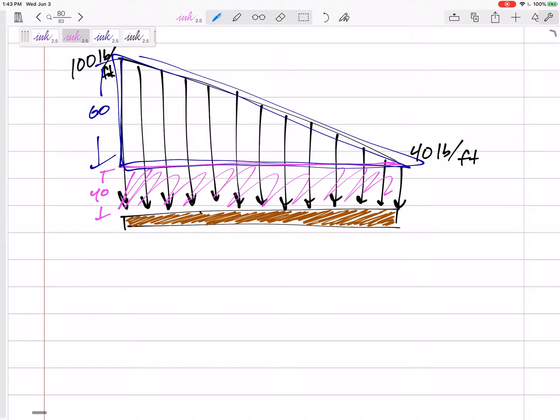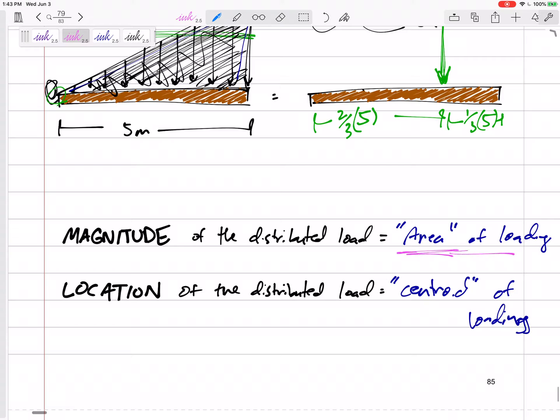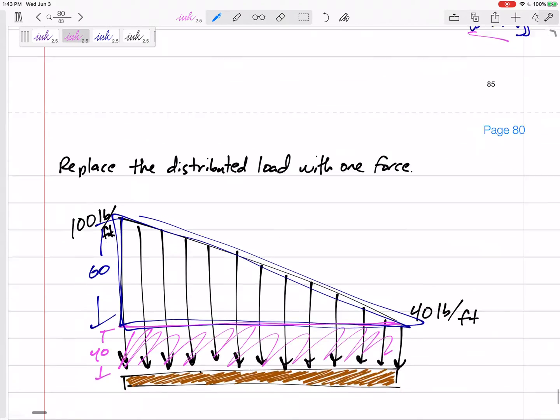So for this pink uniform distributed load, it has a magnitude, or well, let's go back to what we just learned. Area of the loading is the magnitude. The centroid of loading is the location.